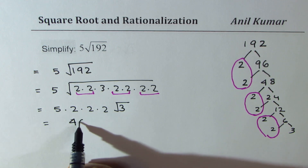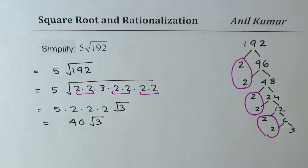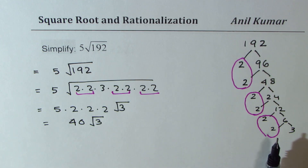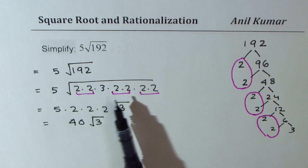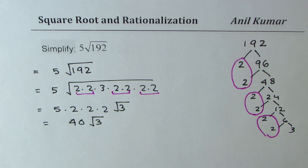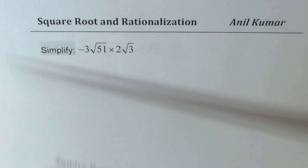So we get 40√3 as our solution. Prime factorization of a number helps us write it in factored form, from where we can pick up the repeating combinations and get the answer. This is a very effective way — it may look like it takes a long time but it really doesn't.